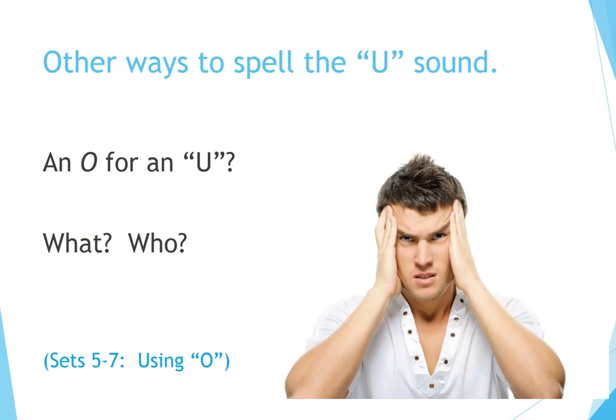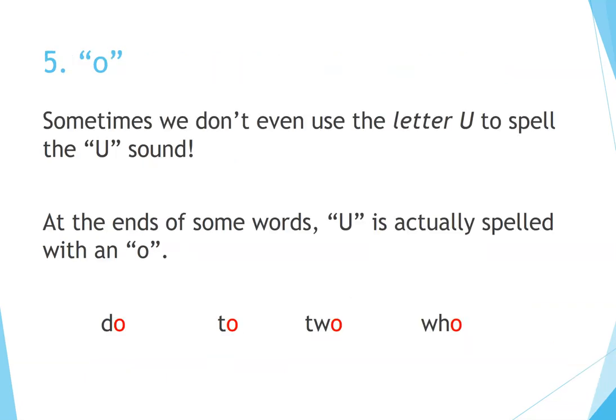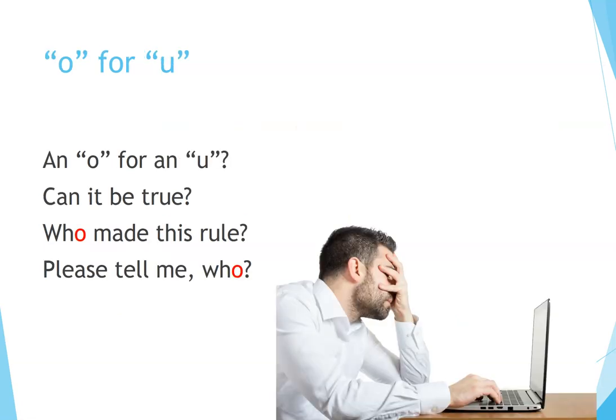Other ways to spell the OO sound. An O for an OO? Number 5: O. Sometimes we don't even use the letter U to spell the OO sound. At the ends of some words, OO is actually spelled with an O: do, to, who. An O for an OO — can it be true? Who made this rule? Please tell me, who.